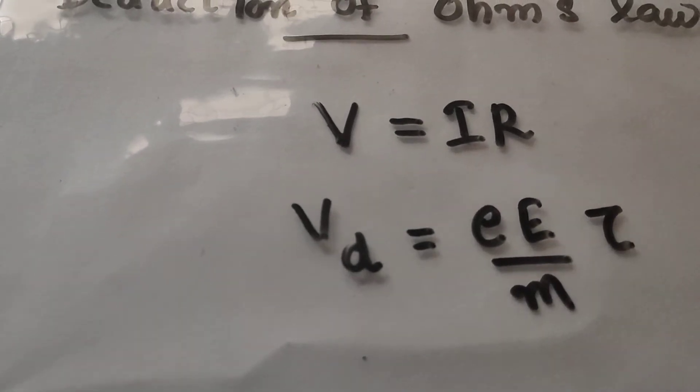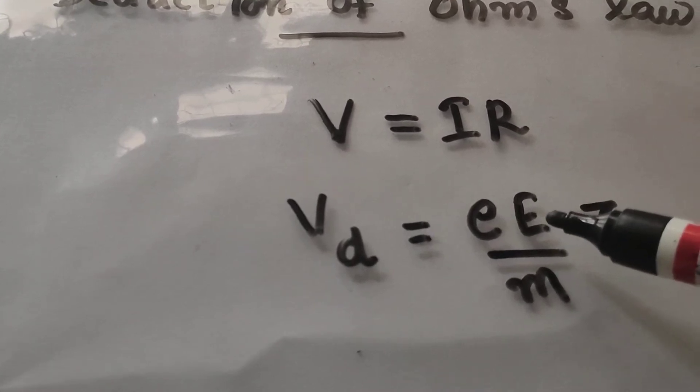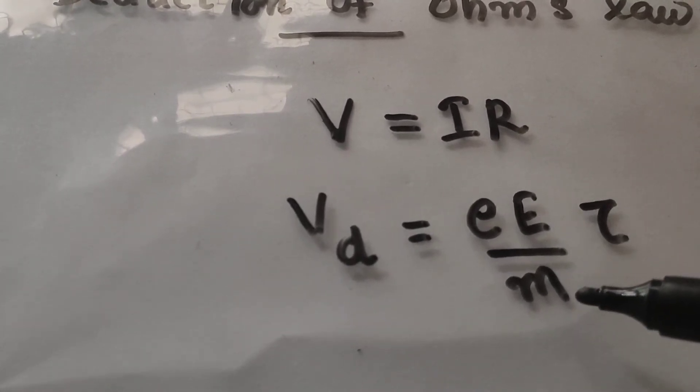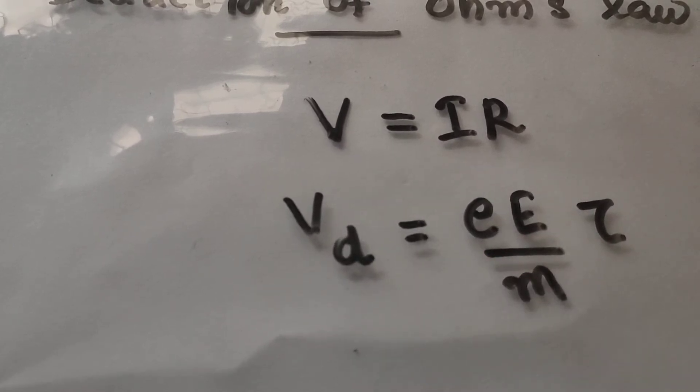Drift velocity Vd is given by eE/m into tau. This is the equation for drift velocity. E is charge of electron, E is applied electric field, m is mass of electron, and tau is relaxation time. Vd represents drift velocity.